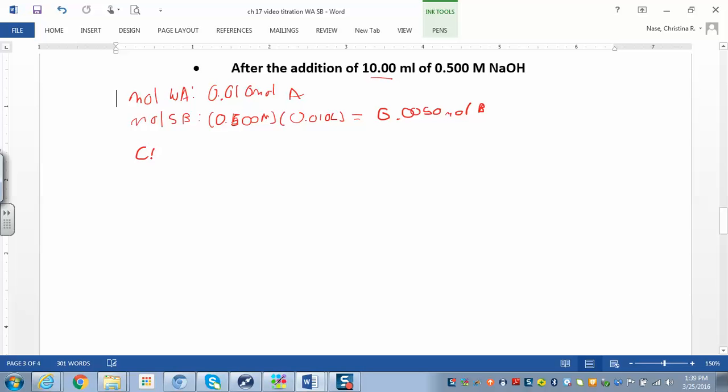You're going to set everything up just like you did in part B. It's another point before you reach the equivalence point, but this is a special point. We have acetic acid reacting with sodium hydroxide.